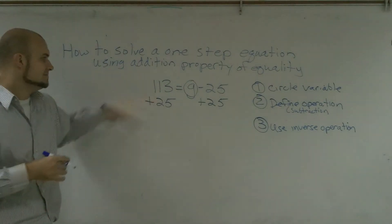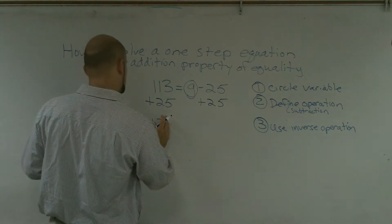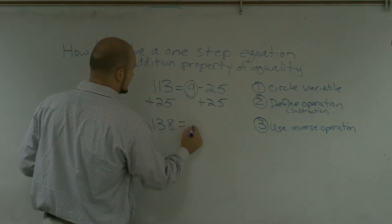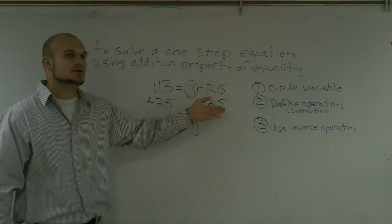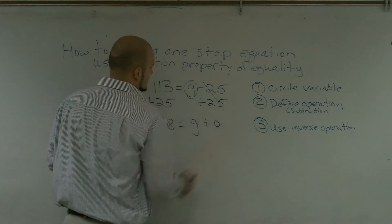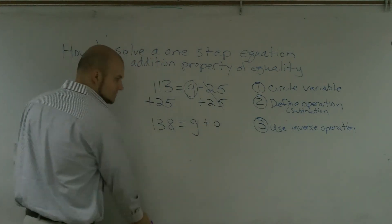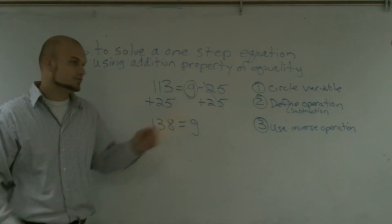So now I have 113 plus 25, which will become 138, equals g. And then I notice my negative 25 plus 25, that's going to cancel out to give me zero. So therefore, really, do I need to write zero? No. So therefore, my answer is 138 equals g.